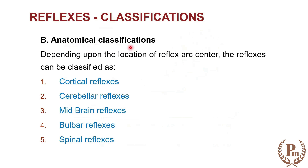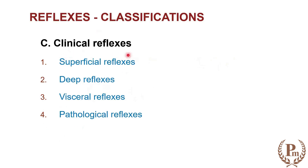Another set of classification is the anatomical classification — depending on the location of the reflex arc center. If the center is the spinal cord, we call it a spinal reflex. If it is the brain stem, it can be bulbar or midbrain reflexes. If it is the cerebellum, we call it cerebellar reflexes. If it is the cortex, we call it cortical reflexes.